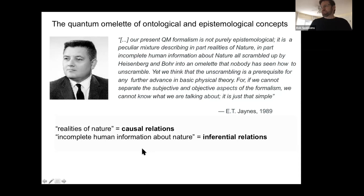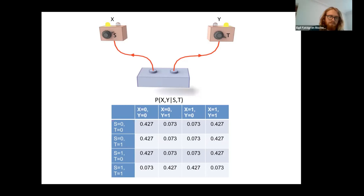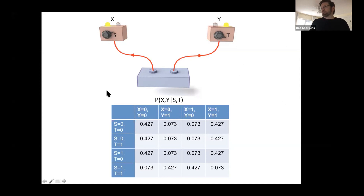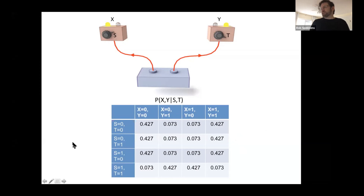Let me give an example using Bell's experiment, which gets perhaps the most attention in the foundations of quantum theory. You have a device that generates two particles, usually in an entangled state, going off to measurement devices. Each measurement device has a setting variable s and t, and outcome variables x and y. Running the experiment many times gives statistics — probabilities for each of the four possible joint settings and four possible outcomes — which quantum theory predicts for particular choices of entangled state measurements.